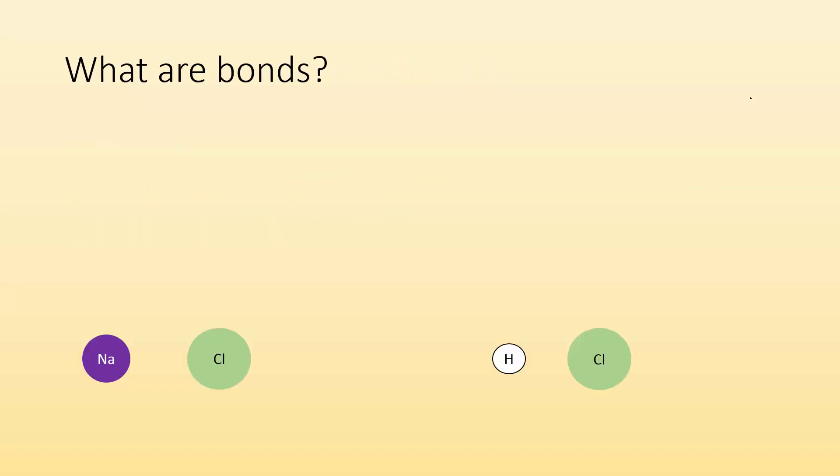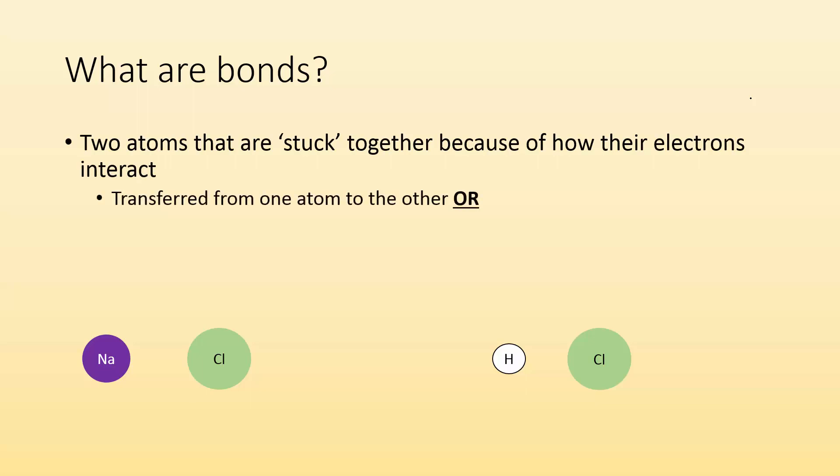So first question, what are bonds? A little review. Two atoms that are stuck together because of how their electrons interact. We can have electrons being transferred from one atom to another, kind of like ionic bonding. The sodium is losing its valence electron and giving it to chlorine, making chlorine negative and sodium positive. And then we have an ionic bond holding those guys together.